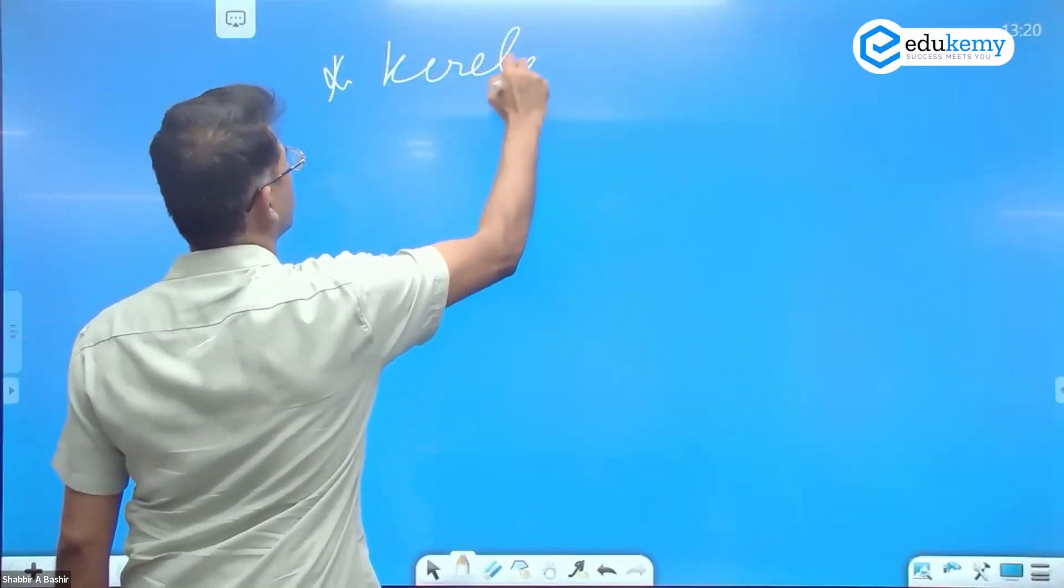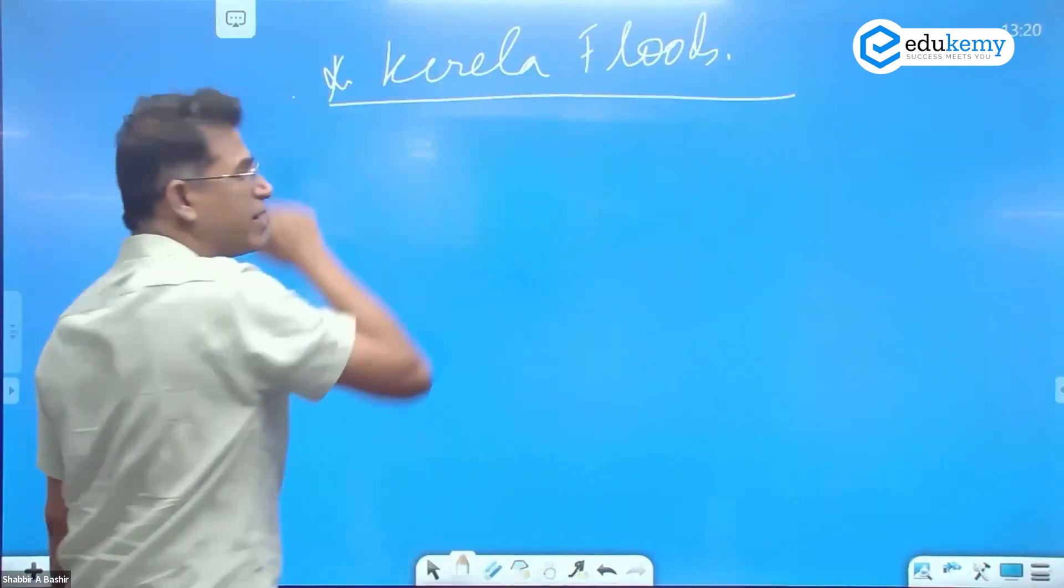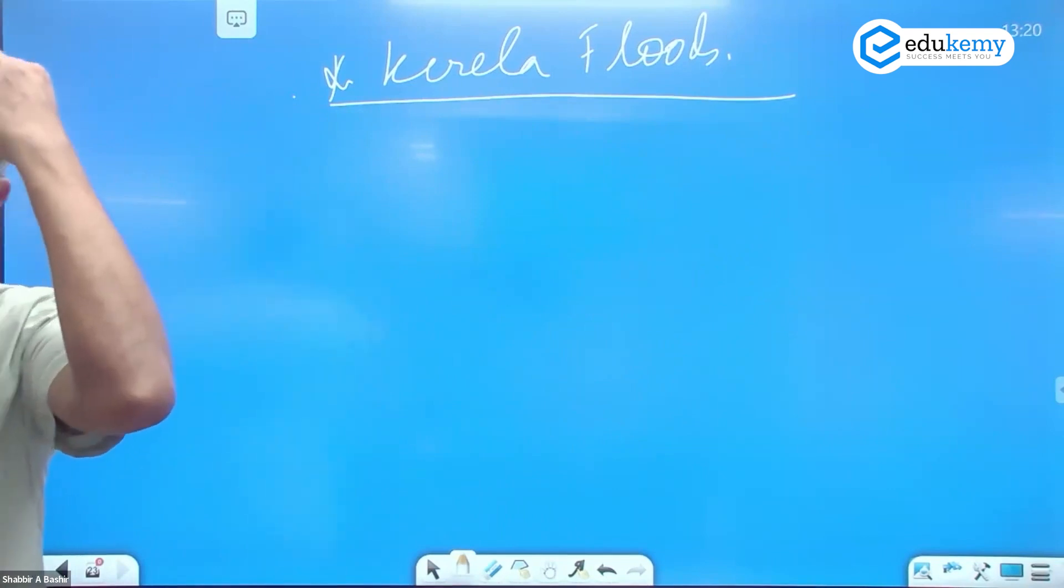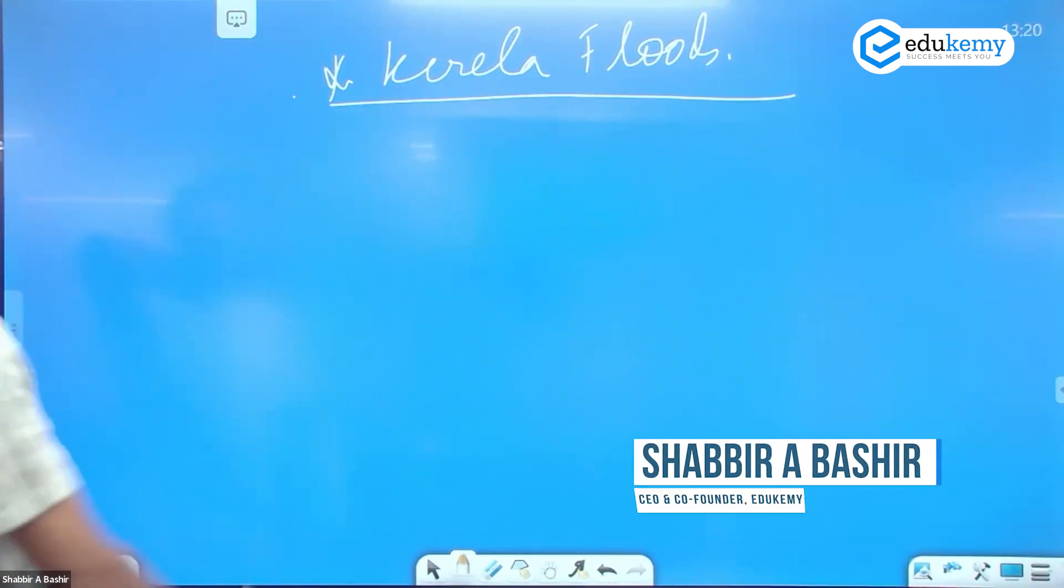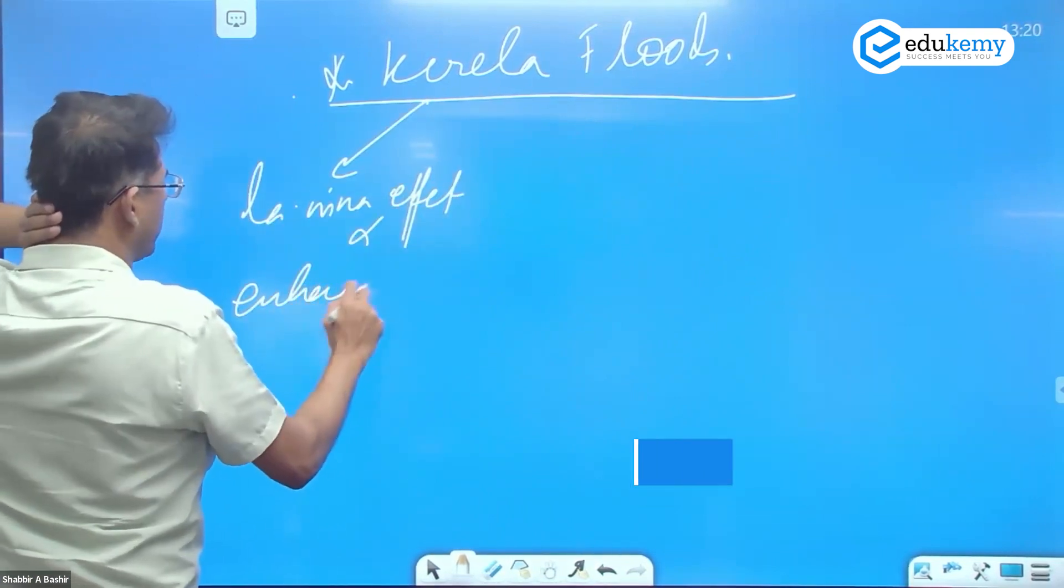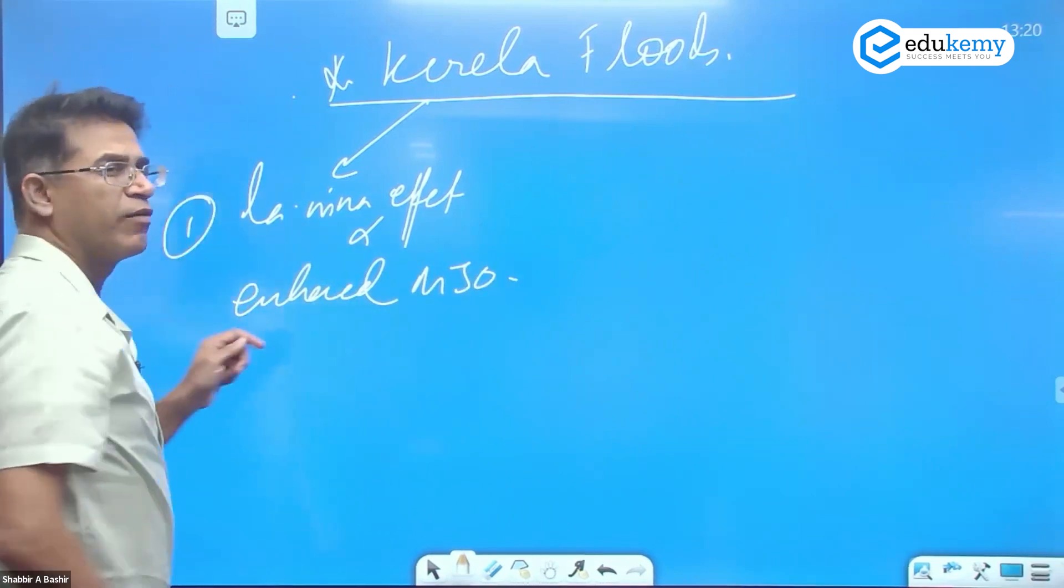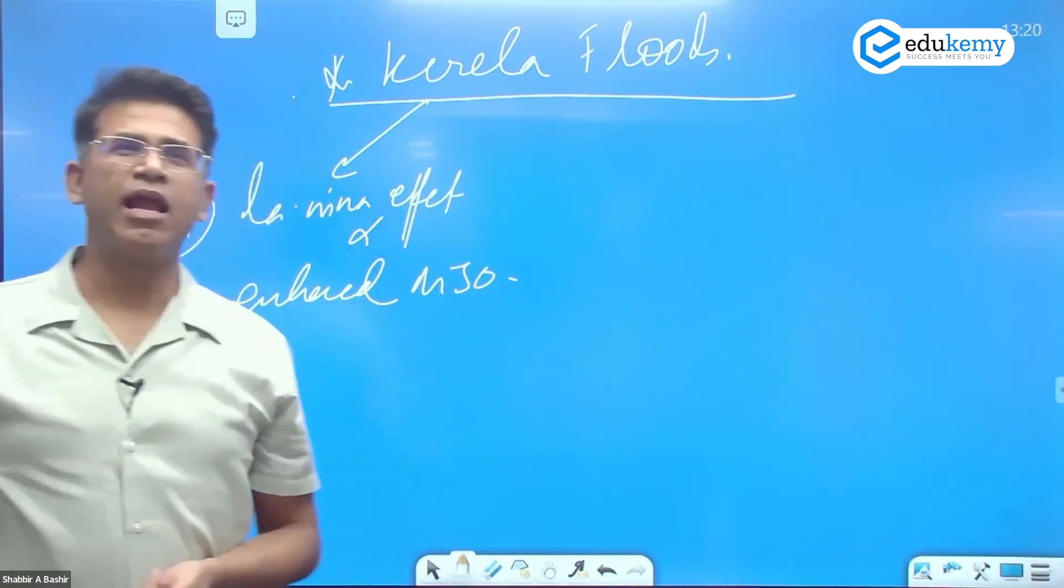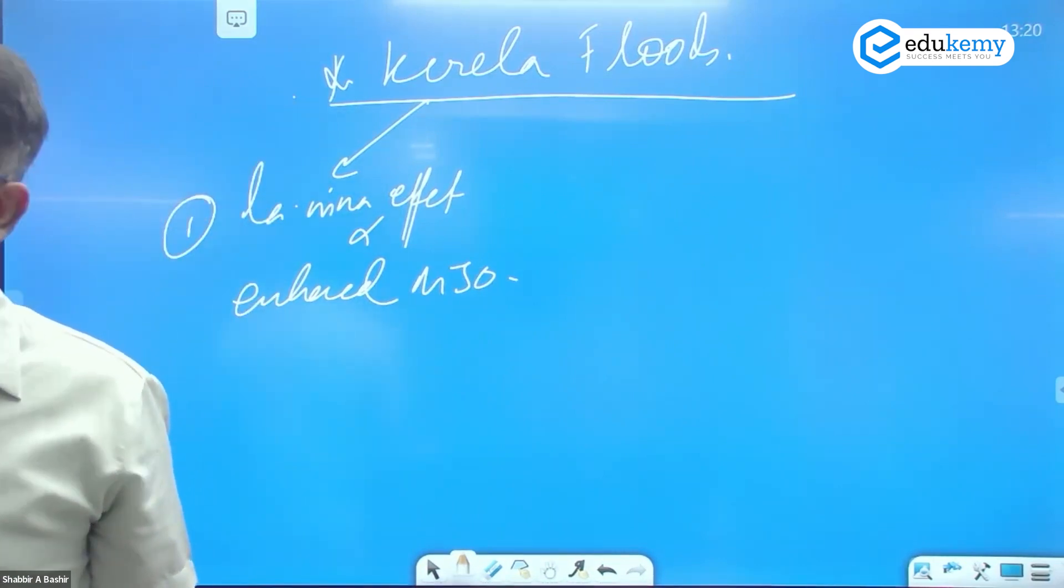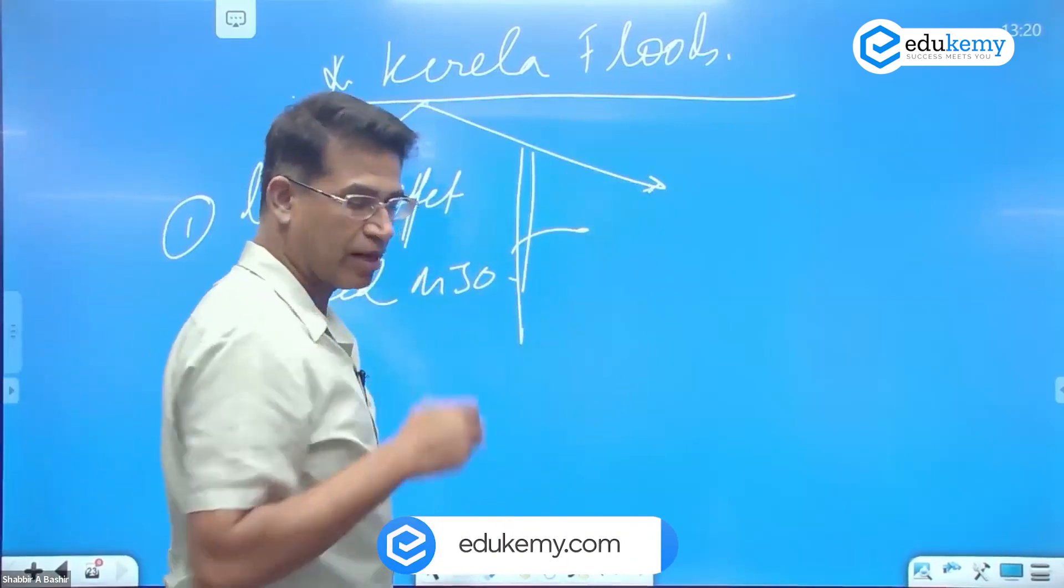Kerala floods - I'll quickly tell you what is happening here. Kerala floods could be a reason for the entire Western Ghats. One cause was the La Nina effect and also the enhanced MJO effect. When La Nina effect and enhanced MJO effect happened for the first time, meteorologically heavy rainfall occurred.